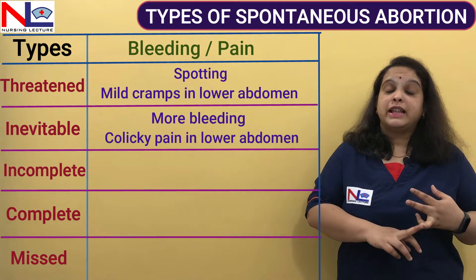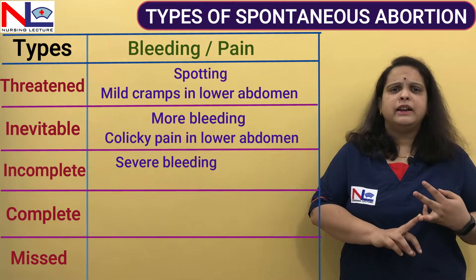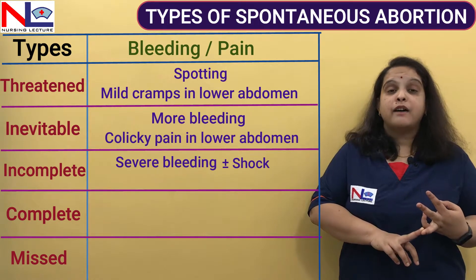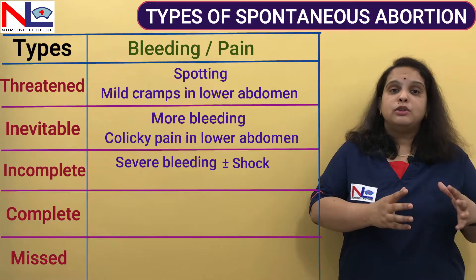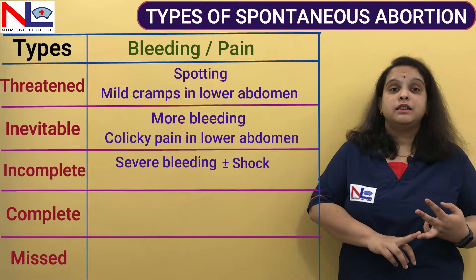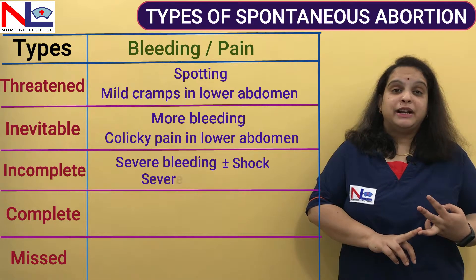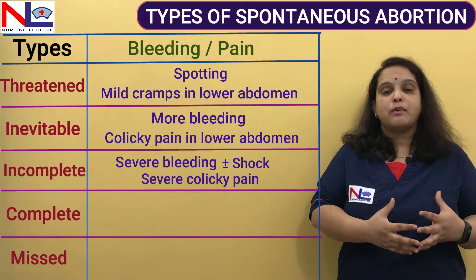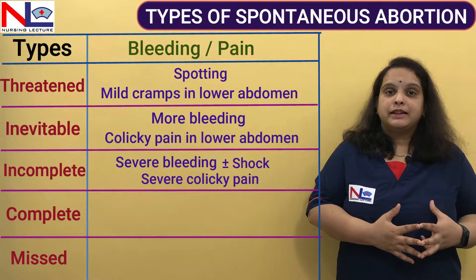In incomplete abortion, there is comparatively massive or heavy bleeding — moderate to severe — and it can be so severe that the woman may go into shock, with features like dropped blood pressure, raised pulse rate, and pallor. Along with that, the pain is also very severe, located in the lower abdominal region — a colic, short stabbing, cramping-like pain.